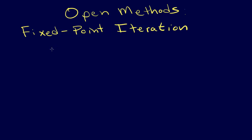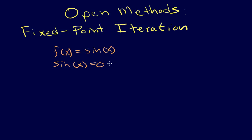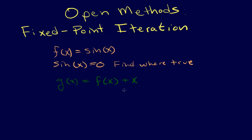This is a root-solving problem, so we're trying to find the roots of an equation. We have some equation f(x) — for example, let's use f(x) = sin(x) — and we're trying to find the roots of that equation. We set the function equal to zero: sin(x) = 0, and where that's true is going to be the roots. Fixed point iteration says: let's come up with another function g(x), where g(x) = f(x) plus x.